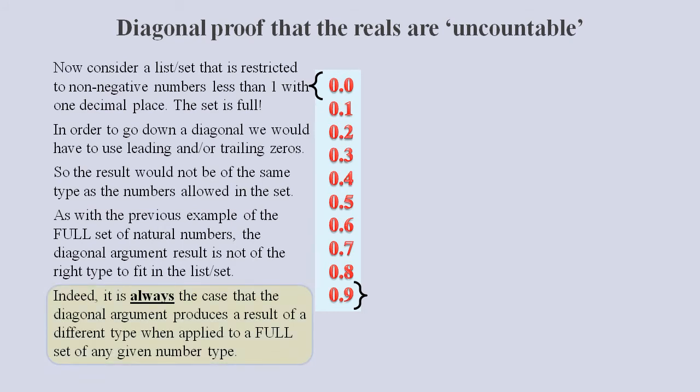As with the previous example of the full list of natural numbers, the diagonal argument result is not of the right type to fit in the list or set. Indeed, it is always the case that the diagonal argument produces a result of a different type when applied to a full set of any given number type. Note that as we change this example to allow more decimal places such as two decimal places, then three decimal places and so on, the size of the diagonal result grows exponentially. So it is easy to appreciate why the diagonal result for a full list will always need to contain far more digits than any number in the list.